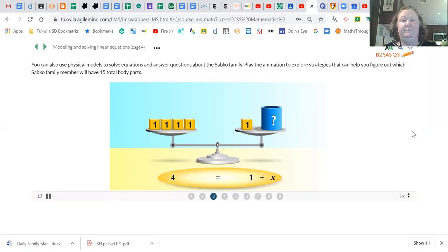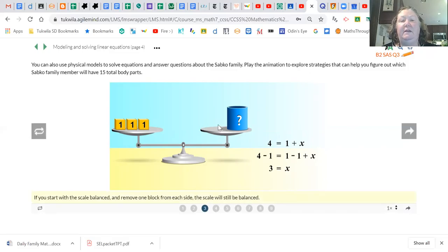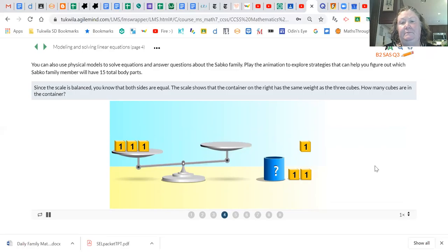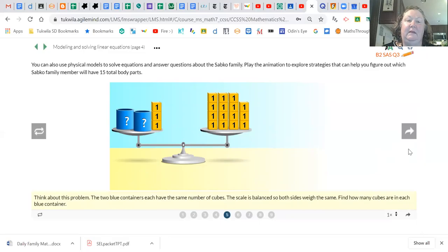Notice in this animation there's four here, one here, plus x. The x on the scale is this cup with a question mark because we're trying to figure out how many are in the cup. Whatever we do to one side of the scale we do to the other side as well, and since we took away one here we took away one there as well. Since the scale is balanced we know that both sides are equal, that means how many are in the cup.